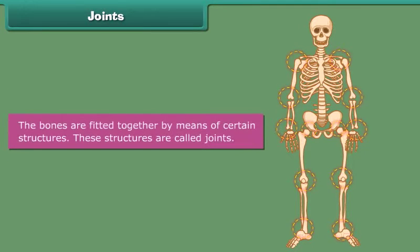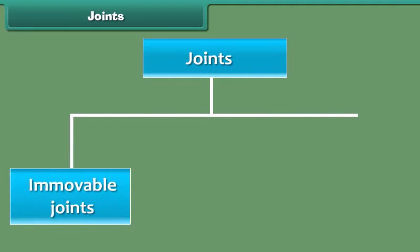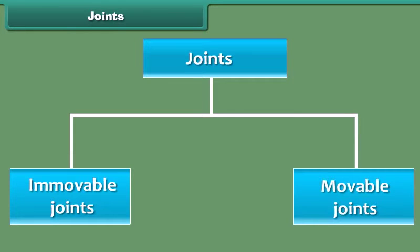The bones are fitted together by means of certain structures. These structures are called joints. Joints facilitate body movements. There are two main types of joints: immovable joints and moveable joints.